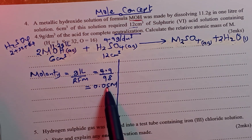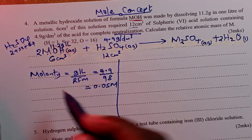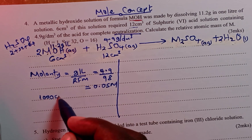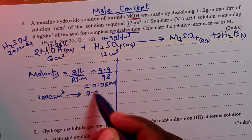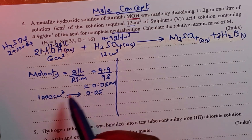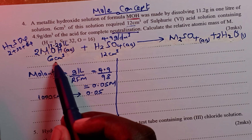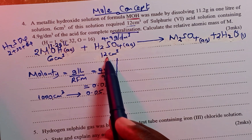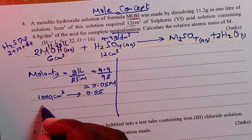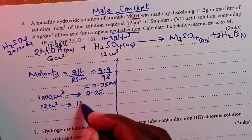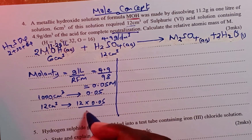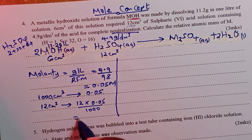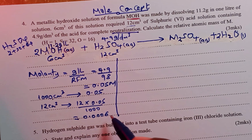0.05 molar is the number of moles contained in one liter, which is 1000 cm³. Out of this, we only required 12 cm³ of the acid reacting with 6 cm³ of the base. We need to calculate the number of moles in 12 cm³, since this is the volume that reacted. So 12 cm³ gives us 12 × 0.05 divided by 1000, which equals 0.0006 moles.